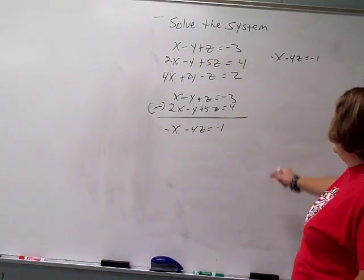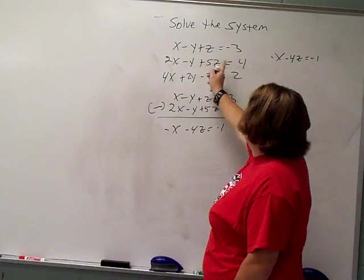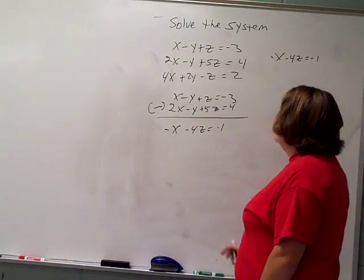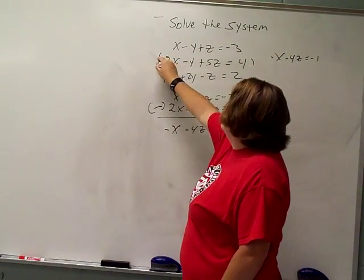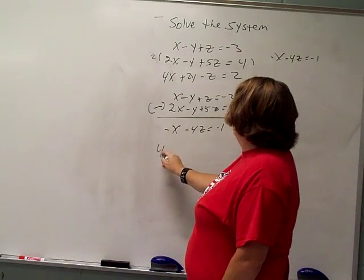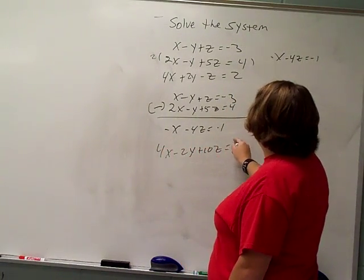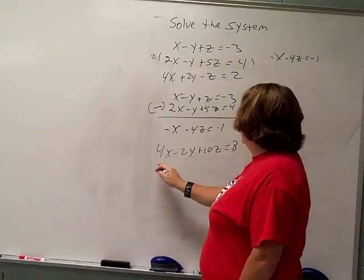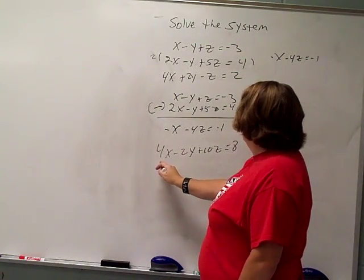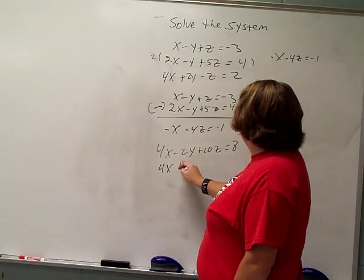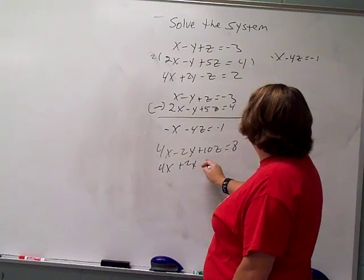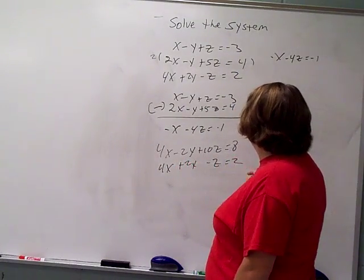And after that, I just put my second two together, but I had to multiply the second one by 2 to make that a 2y. So when I multiplied all of that by 2, I got me 4x minus 2y plus 10z equals 8. And I just copied this one down again.